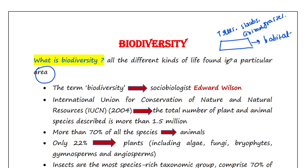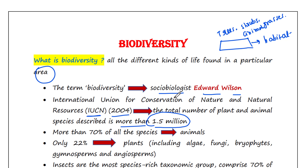The term biodiversity was given by the sociobiologist Edward Wilson. According to the International Union for Conservation of Nature and Natural Resources — that is IUCN — 2004 report, the total number of plant and animal species described is more than 1.5 million. Actually in our world we have more than this number of species, but those are not yet described or discovered. So the discovered and described species number is only more than 1.5 million.